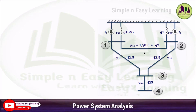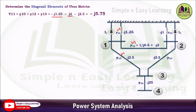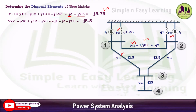Start with the diagonal elements. For Y11, consider all lines connected to bus 1: Y10, Y12, and Y13. Adding these three admittances: -j1.25 + (-j2) + (-j2.5) = -j5.75. Similarly, for Y22, add Y20, Y12, and Y23. Adding these three gives the Y22 admittance value.